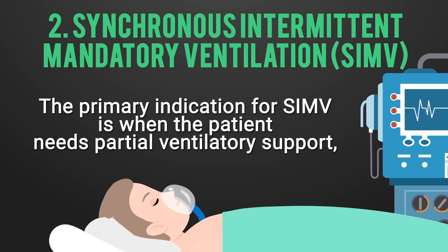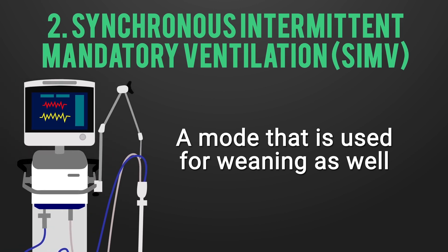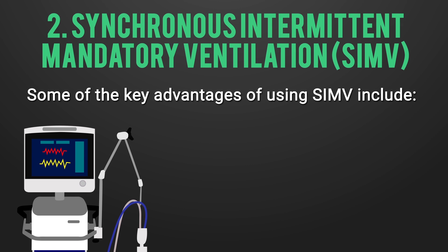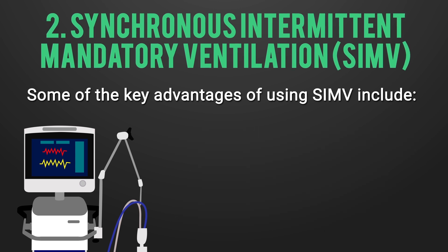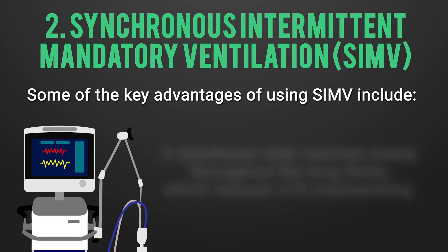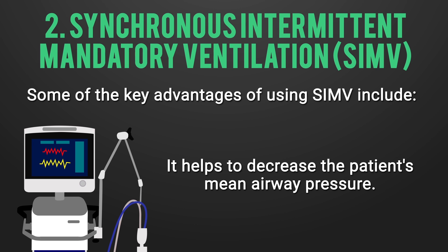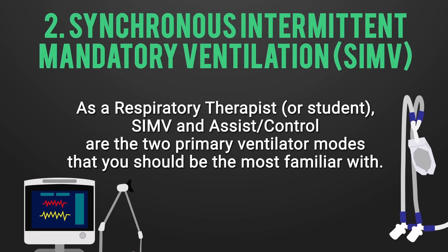The primary indication for SIMV is when the patient needs partial ventilatory support. Since the patient can take spontaneous breaths, they can contribute to some of their minute ventilation. SIMV is also used for weaning. Key advantages include maintaining respiratory muscle strength and avoiding muscular atrophy, distributing tidal volumes evenly throughout the lung fields to reduce V/Q mismatching, and decreasing the patient's mean airway pressure. SIMV and Assist Control are the two primary ventilator modes to be most familiar with.